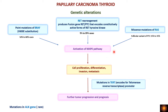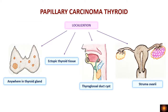Whether it is BRAF mutations, RET rearrangement, or RAS mutations, the final outcome is activation of the mitogen-activated protein kinase (MAP kinase) pathway, producing signals that cause cell proliferation, differentiation, invasion, and metastasis — resulting in tumor formation. Additionally, if there is a mutation of the TERT promoter (telomerase reverse transcriptase), there will be further tumor progression with bad prognosis. Very rarely, ALK gene mutations are also seen.